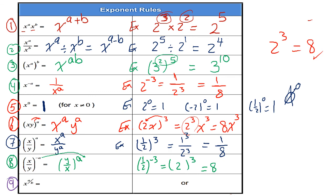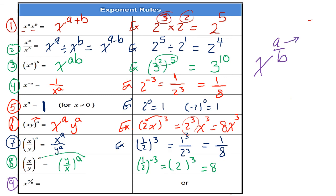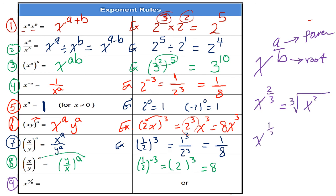Finally, rule number 9: X to the power of a over b. Here, a is the exponent or power, and b is the root. For example, X to the power of 2 over 3 means the cube root of X squared. Also, X to the power of one-half equals the square root of X, because we do not write the 2 outside a square root sign.